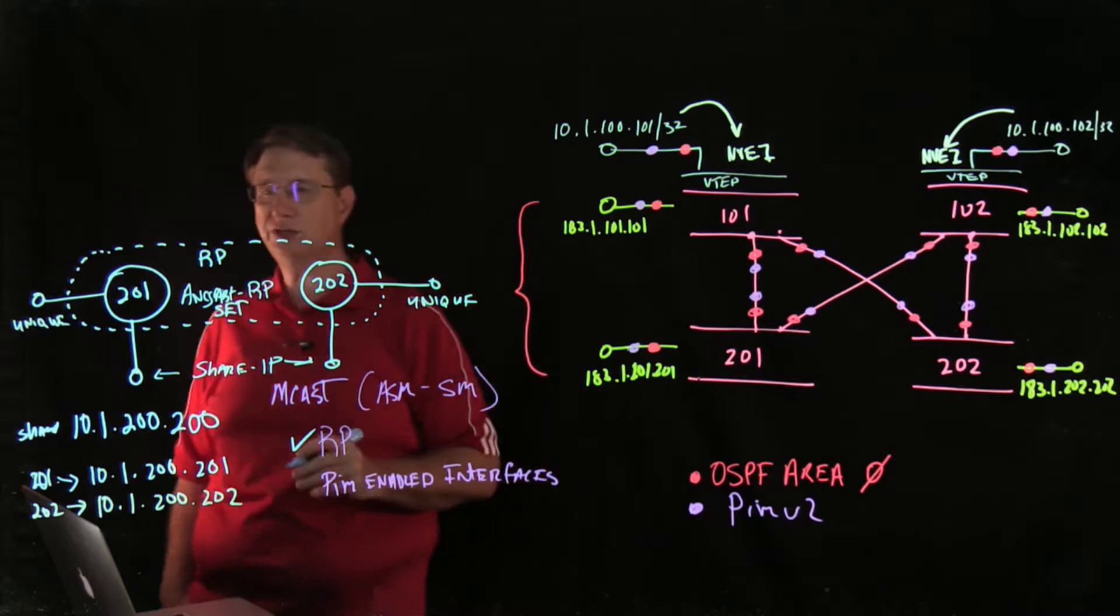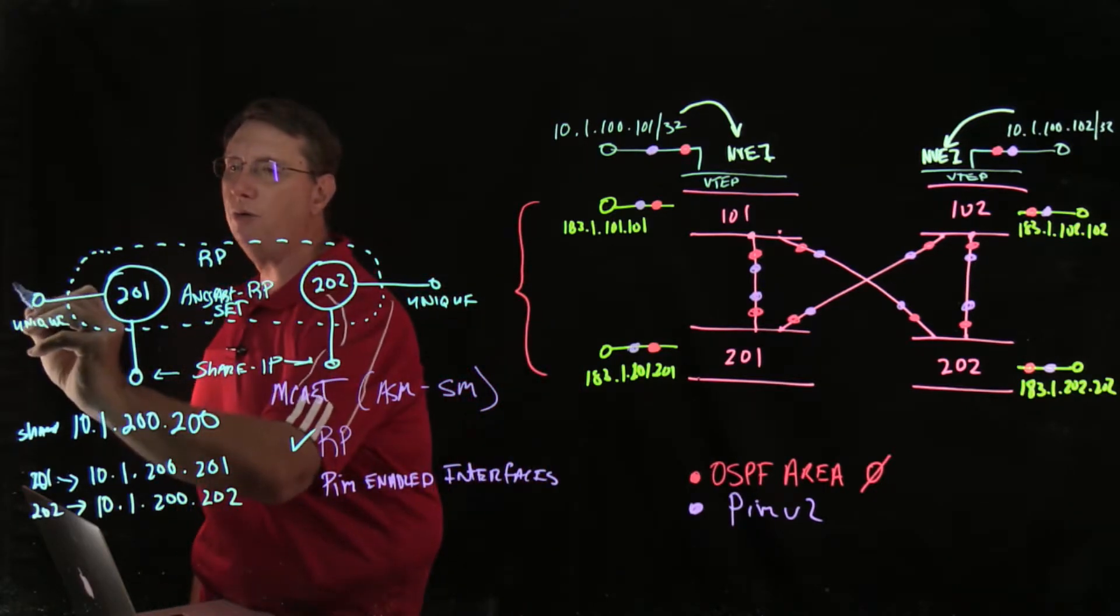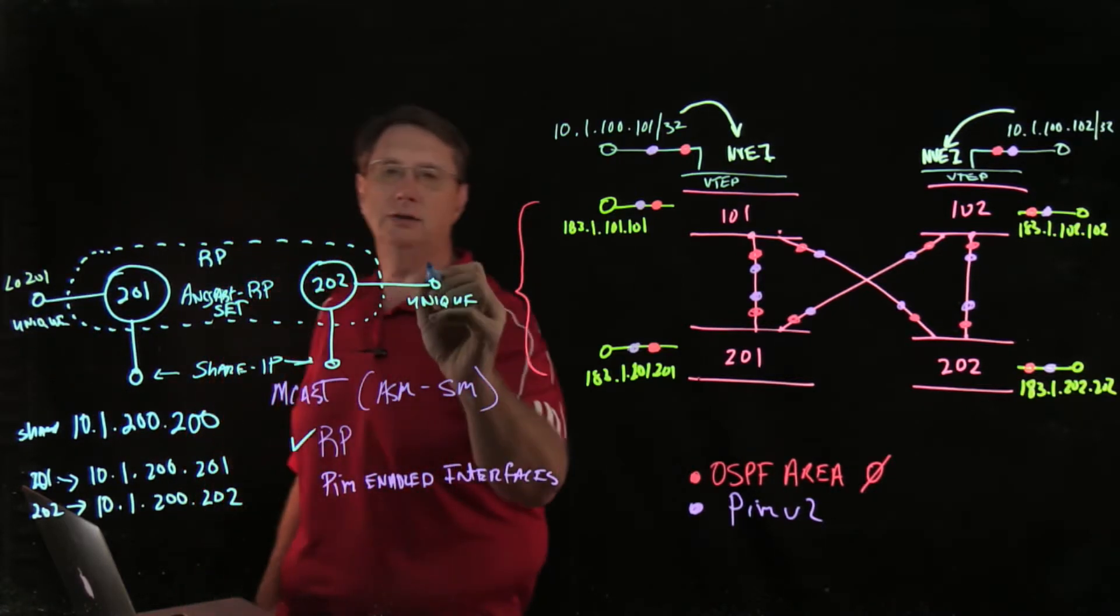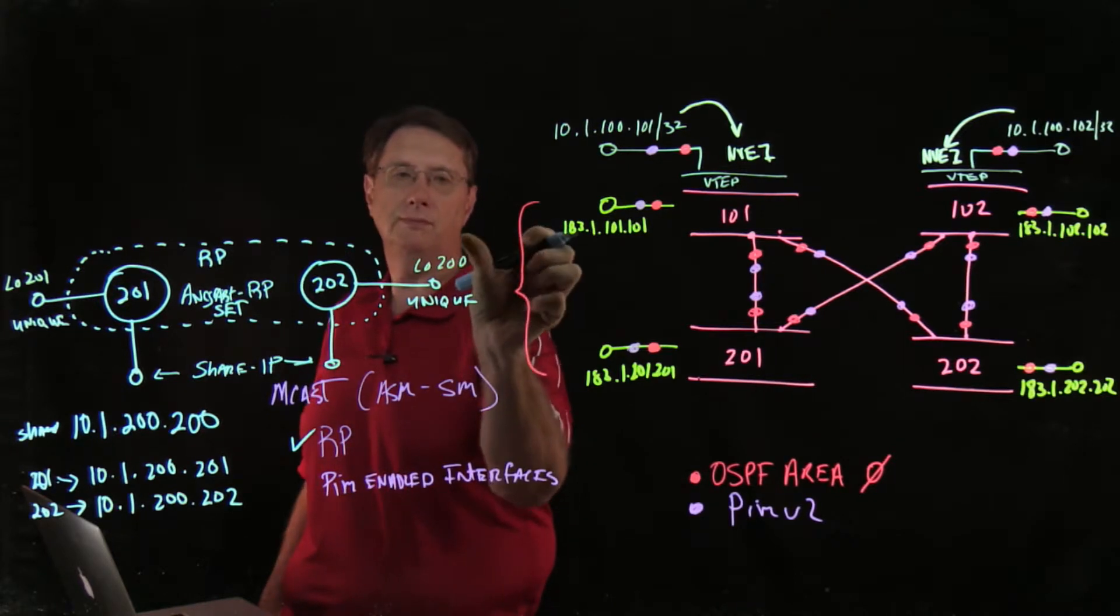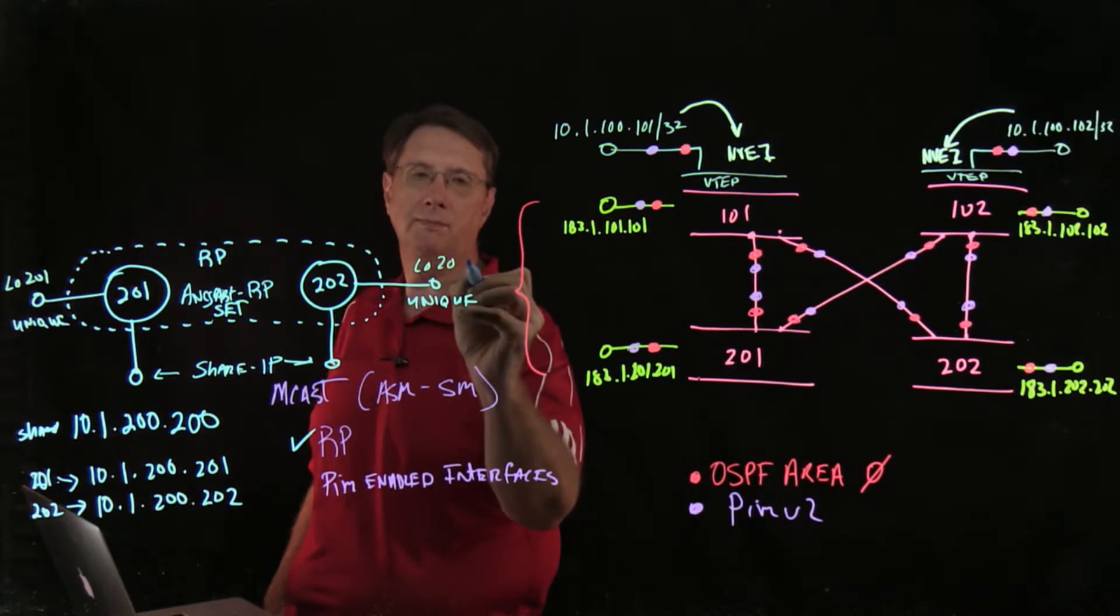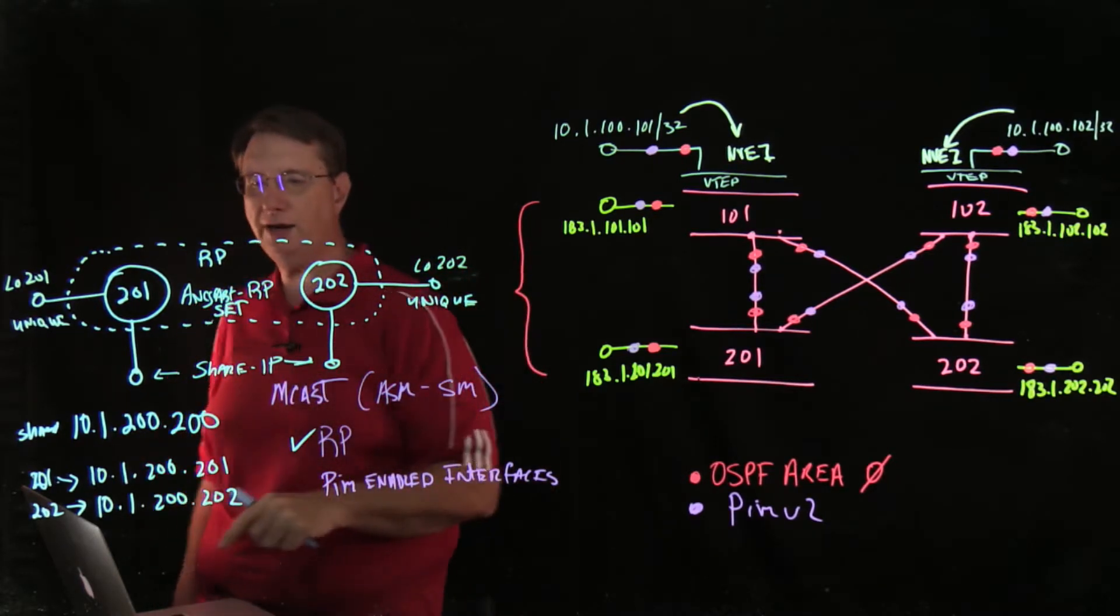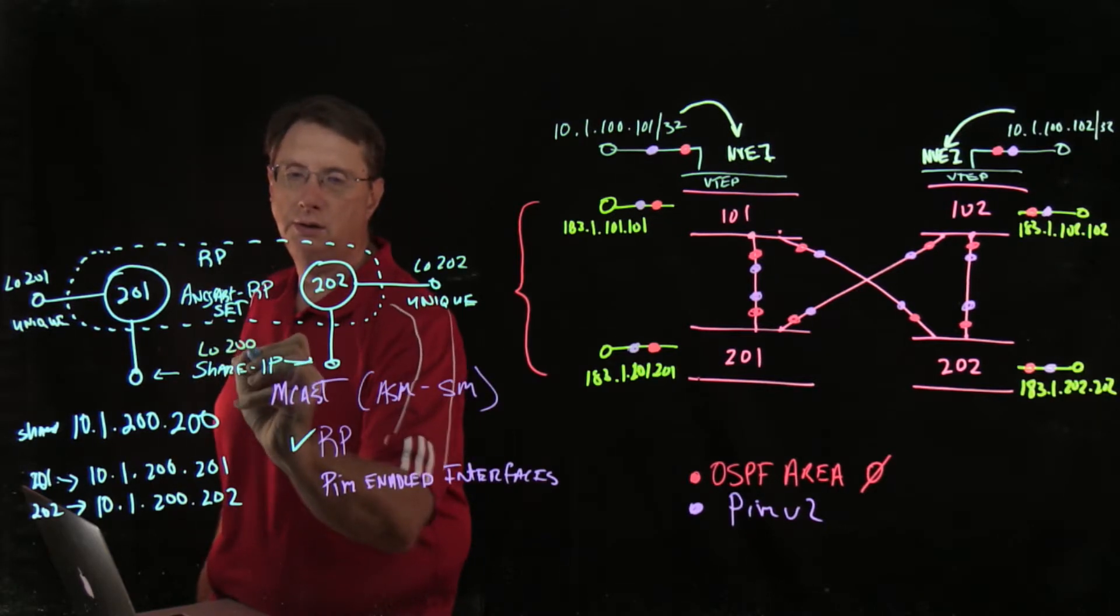Now the way that I'm going to do this is I'm going to create interfaces on these devices. So I will create loopback201 and loopback202. And then this shared interface is going to be loopback200.